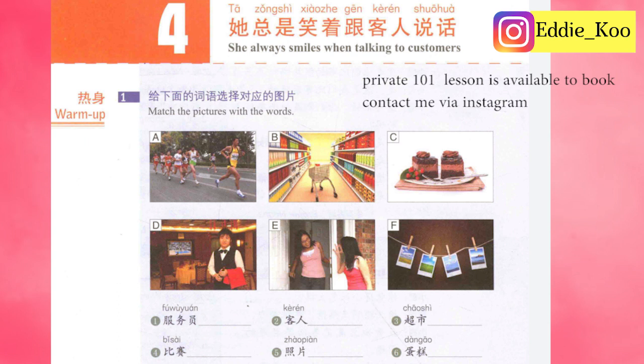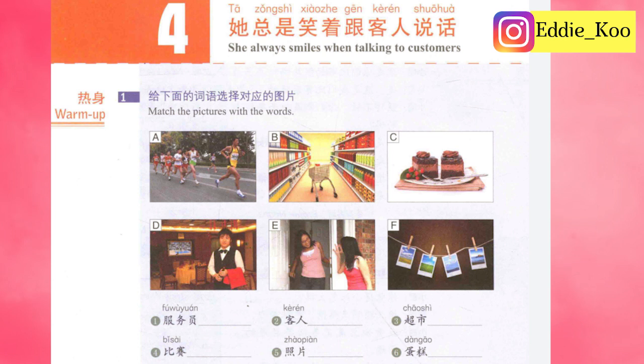他总是笑着跟客人说话。She always smiles when talking to customers. 他 means she. 总是 is a frequency adverb meaning always. 笑着 means smile, and 着 is an indicator for present continuous. 跟 means with. 客人 means customers or guests. 说话 means talk. In this sentence, the real verb is 说话, which is talk. 笑着 is just an adverbial phrase — it works as an adverb.